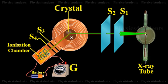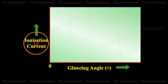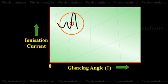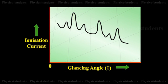The ionization current is a measure of the intensity of X-rays reflected by the crystal. The ionization current is measured for different values of glancing angle theta. For certain values of glancing angle, the ionization current increases abruptly.